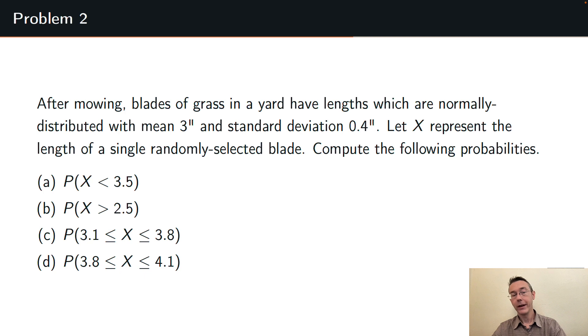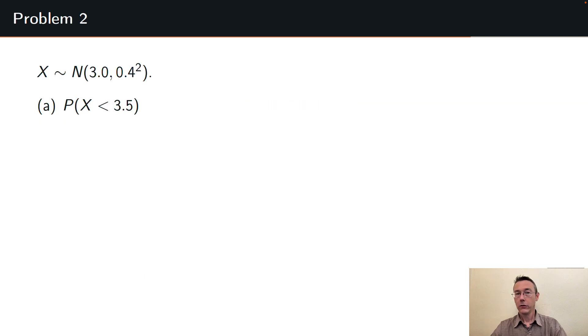First of all that X is less than 3.5. So 3.5 is slightly longer than average length for a blade of grass here. I want to know the probability of getting something shorter than that. So I'm expecting something upwards of 50%. We're going to be doing this using the pnorm command. That's the CDF for the normal distribution. It gives us exactly this probability. The probability that X is less than 3.5 in the normal distribution with mean 3 and standard deviation of 0.4.